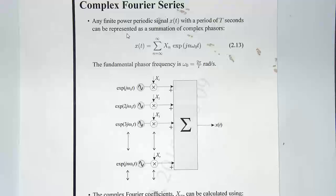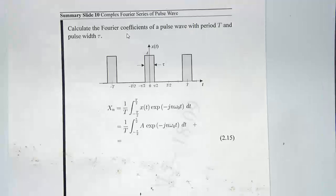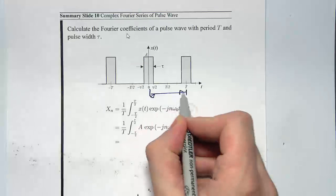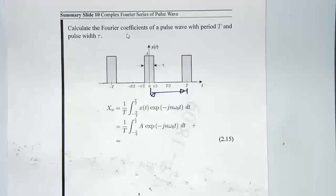So let's move on to summary slide 10. We've got a signal, which is quite a common signal you'll come across, a rectangular pulse. And the period of that waveform is capital T. So you can see that. And the signal is 0 everywhere within that period, except for between minus tau on 2 and plus tau on 2. So the pulse width is tau.